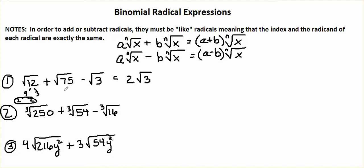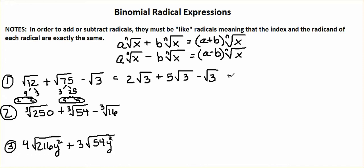How about if we simplify radical 75? Radical 75 is 3 times 25, and we know that 25 is 5 times 5. So we have a nice group of 2 here. We're going to pull out a 5, and our 3 remains under a radical. This is as simple as this one gets. So now we have 2 square root of 3 plus 5 square root of 3 minus the square root of 3.